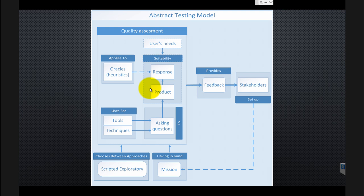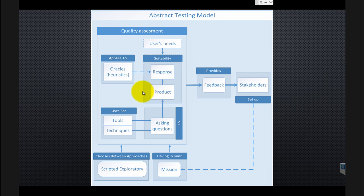One more thing that is sometimes forgotten is that the tester's choices — such as selecting tools, techniques, and approaches — are subjective. The tester's understanding of users and their needs is also subjective, and applying oracles is subjective too. It really depends on the tester's knowledge, experience, and familiarity with the product. This means feedback can be different if different testers perform the quality assessment. Stakeholders should consider this — it probably makes sense to have a group of testers rather than just one person.